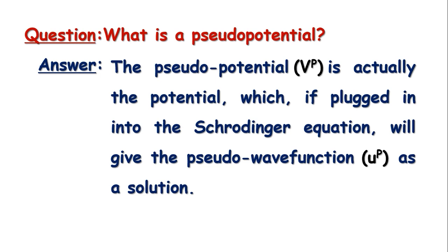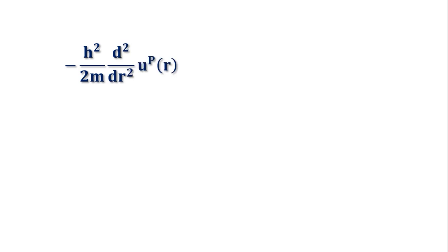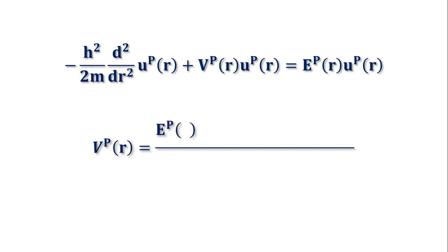Mathematically, if we call the pseudo wave function as up and the pseudopotential as vp, then the Schrödinger equation will be: -ℏ²/2m d²/dr² up(r) + vp(r)up(r) = εp(r)up(r).